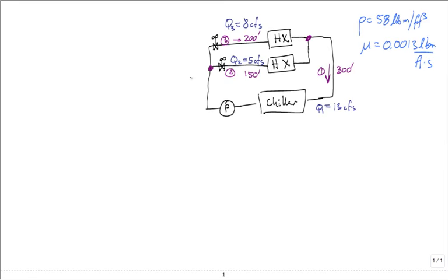Our goal is to have velocity always less than a maximum of 10 feet per second — that's often a good design criterion. Water moving through a system very fast makes noise. In a building where people are taking tests or working in office space, you don't want to hear fluid rushing through the duct or pipe system. High speeds also cause pipe erosion, so low velocity is a design criterion.